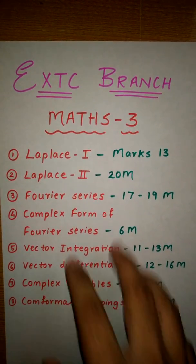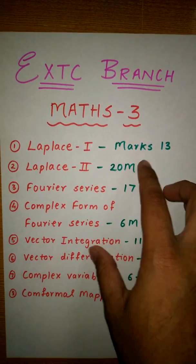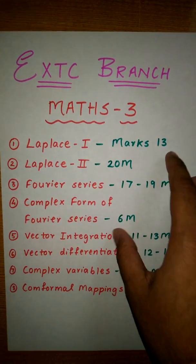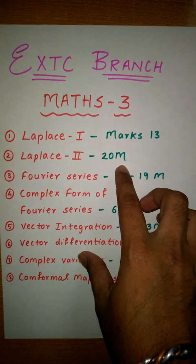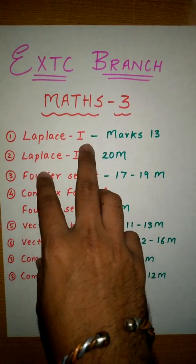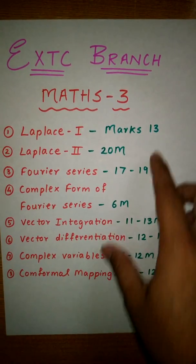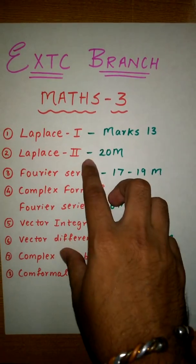First is Laplace-I, which has approximately 13 marks weightage. Laplace-II has 20 marks weightage. Mostly Laplace-I has one sum and Laplace-II has two sums, including the option.